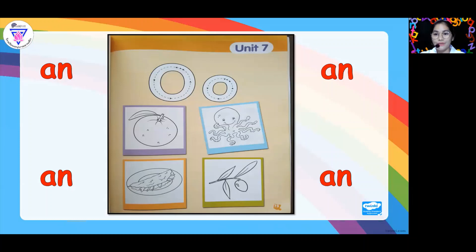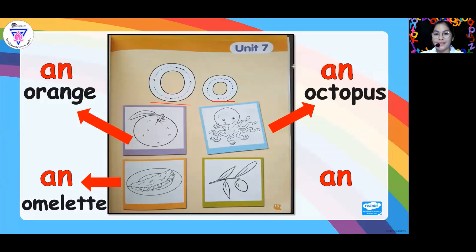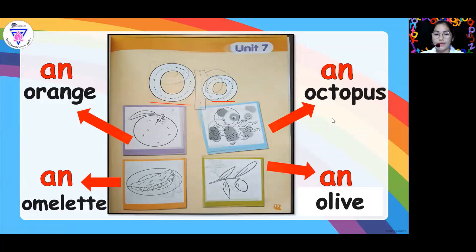But before that, let's review this first. So this is an orange. Next to that, an omelet. So this is letter O — the capital O and this is the lowercase o. We also have here an olive.